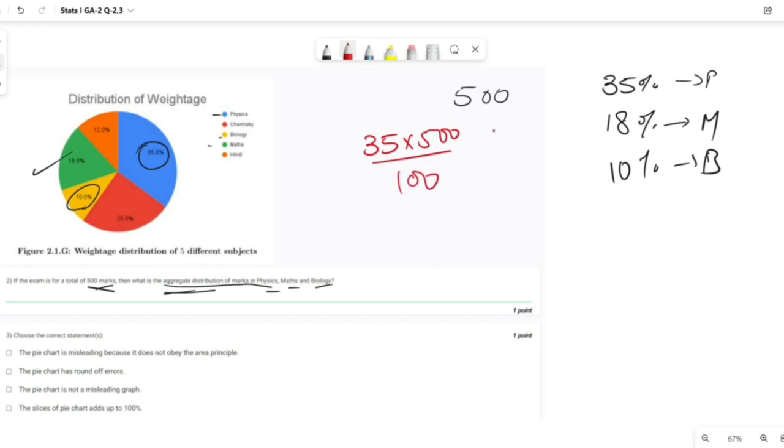Plus Maths is 18% of 500 by 100, plus Biology is 10% of 500 by 100. So this is Biology, this is Physics and this is Maths. On addition, this 100 gets cancelled with 500 and becomes 5.